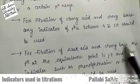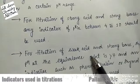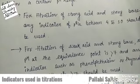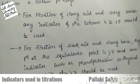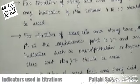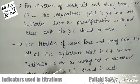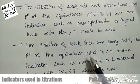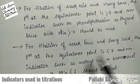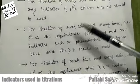For the titration of weak acid and strong base, the base is strong so the solution will be basic, and the pH at the equivalence point is greater than 7. An indicator such as phenolphthalein or thymol blue, which have pKin greater than 7, should be used. Similarly, for the titration of weak base and strong acid, the solution will be acidic, and the pH at the equivalence point is less than 7. Indicators such as methyl red and bromocresol blue, with pKin less than 7, should be used.